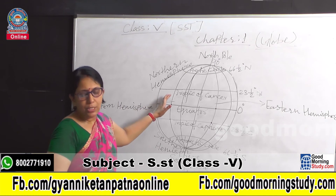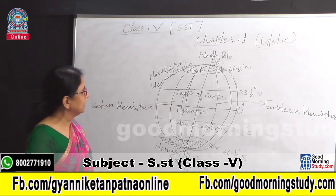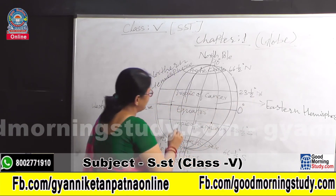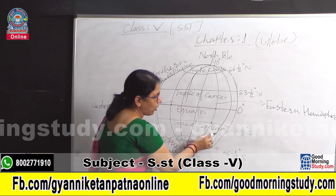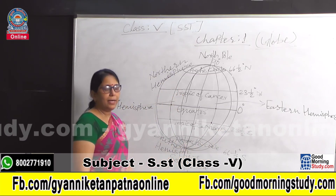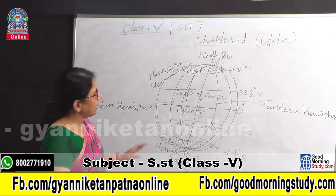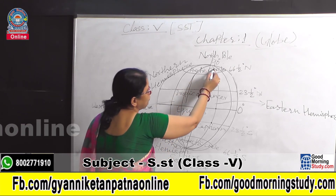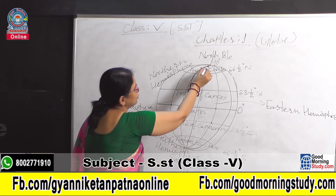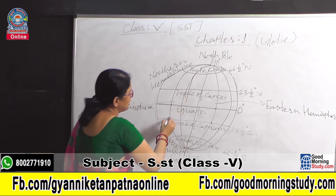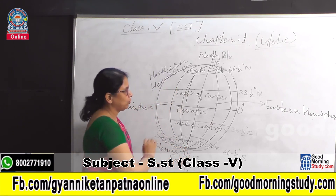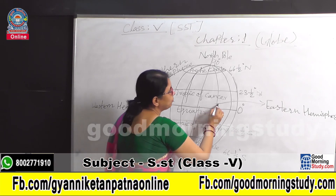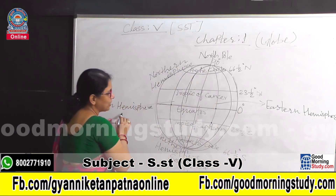There are important lines of latitude or parallels: the Tropic of Cancer, indicating 23 and a half degrees north, and the Tropic of Capricorn, indicating 23 and a half degrees south. The important lines of longitude or meridians run from the North Pole to the South Pole and are divided into the Eastern Hemisphere and the Western Hemisphere.